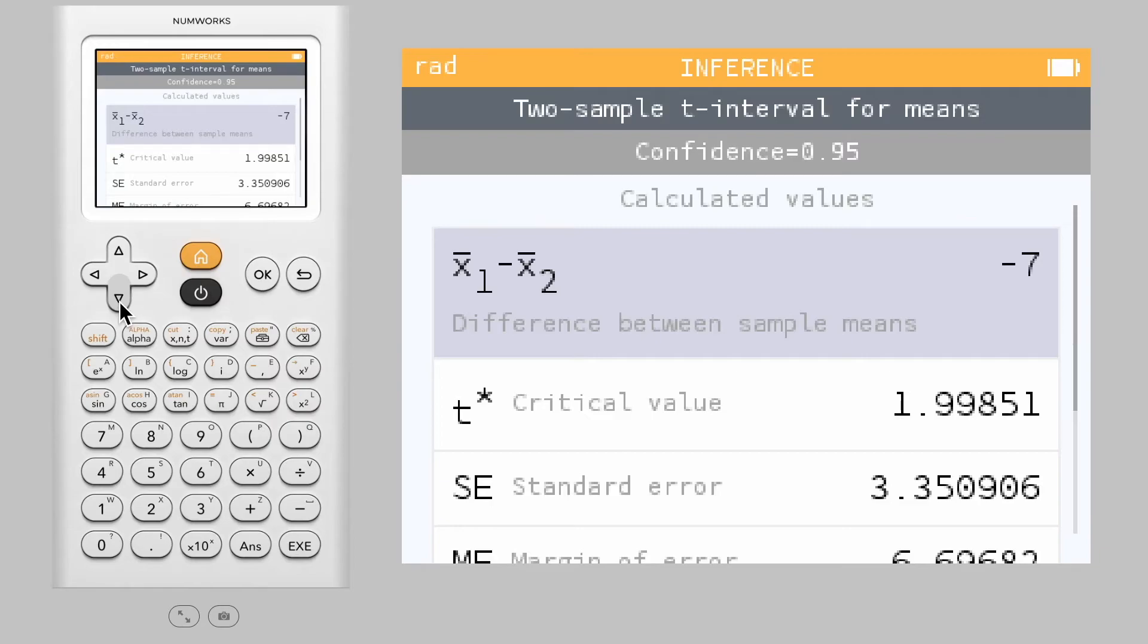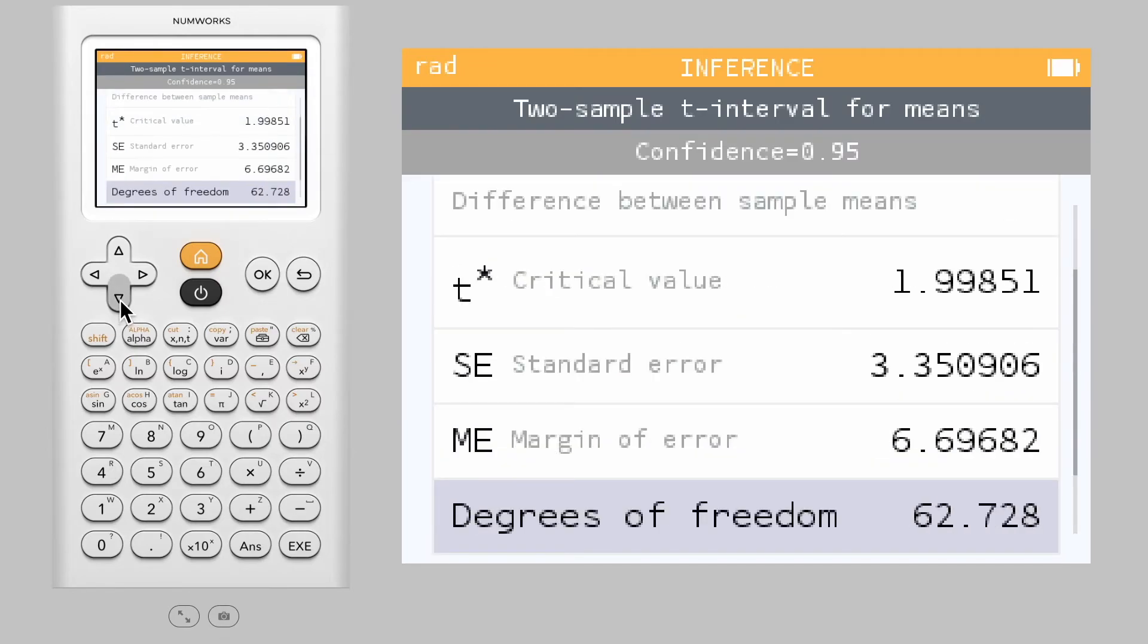We now see the calculated values for this interval, which will include the difference between sample means, the t-star critical value, the standard error, the margin of error, and the degrees of freedom.